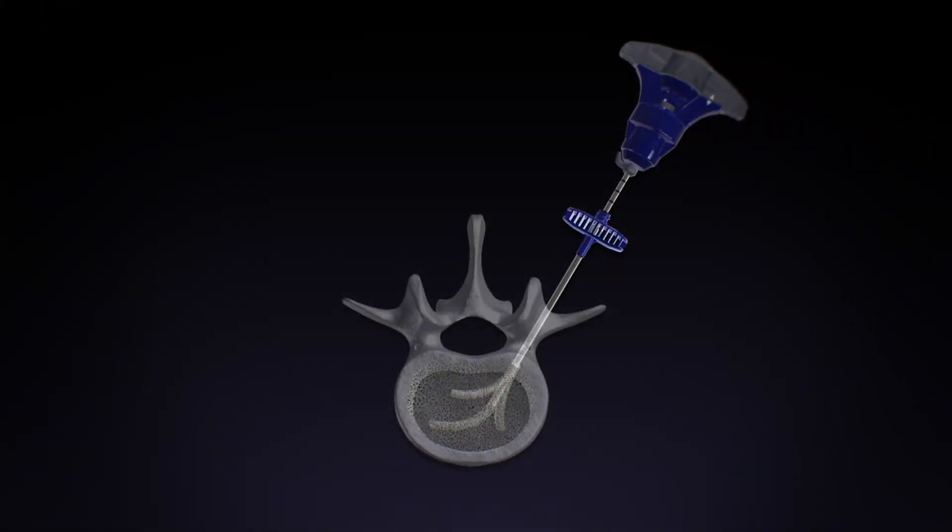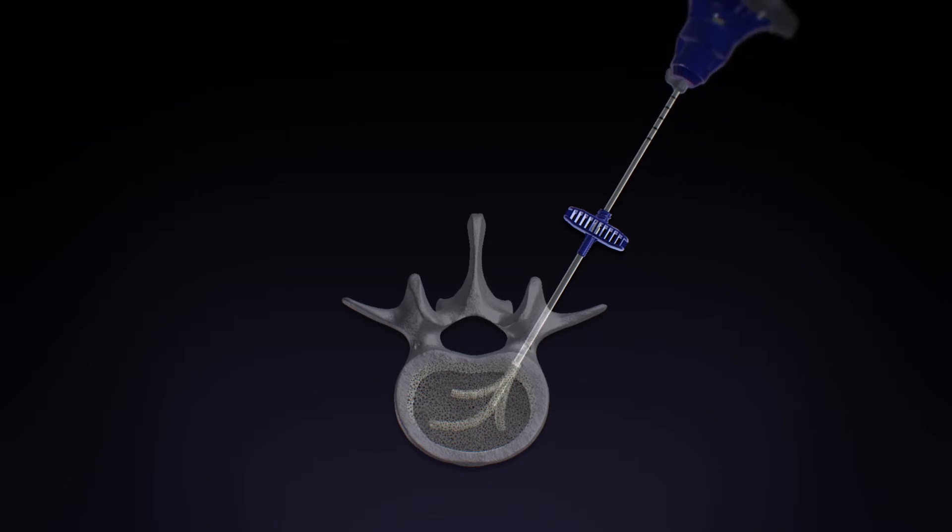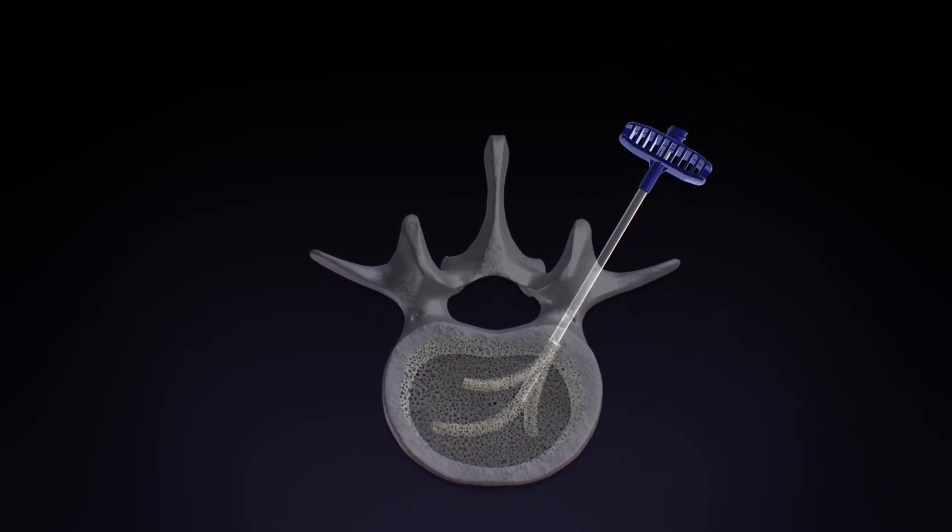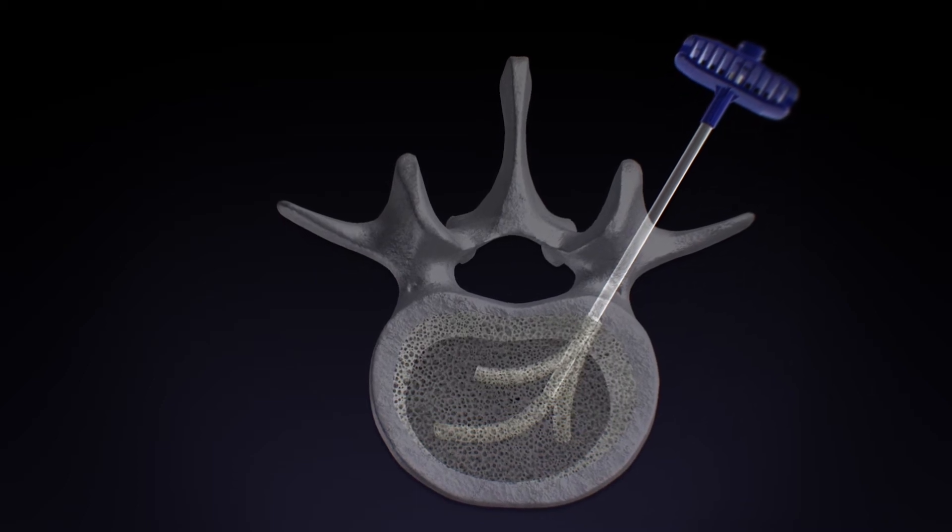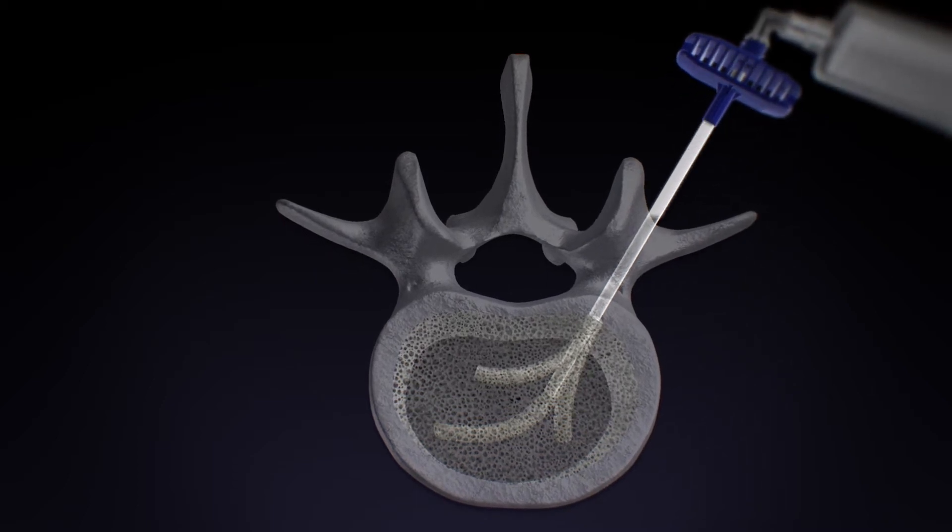Power curve is removed. A cement delivery cannula is then introduced into the vertebra and locked into the working cannula in order to deliver the high viscosity cement to the fracture.